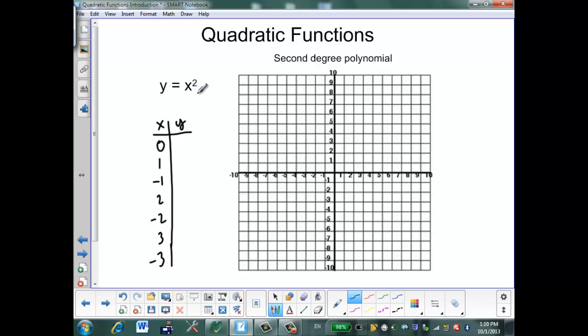And I'm going to substitute those values into my equation and calculate a corresponding value for y. So if I go 0 squared, my y value is going to be 0. 1 squared, my y value is going to be 1. Negative 1 squared is 1. And so on until I filled out all the points in my table.